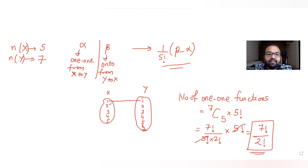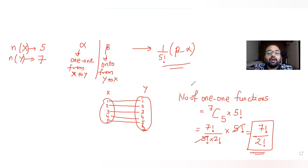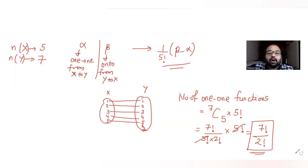For example, we can map the first five elements of X to the first five elements of Y. So the number of one-to-one functions from X to Y is alpha = 7! / 2!.